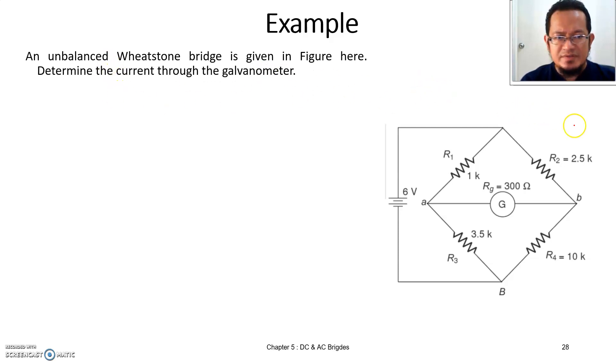Let's say for example you have a Wheatstone bridge here. From these resistances, we can tell that all the resistance here are under unbalanced condition.